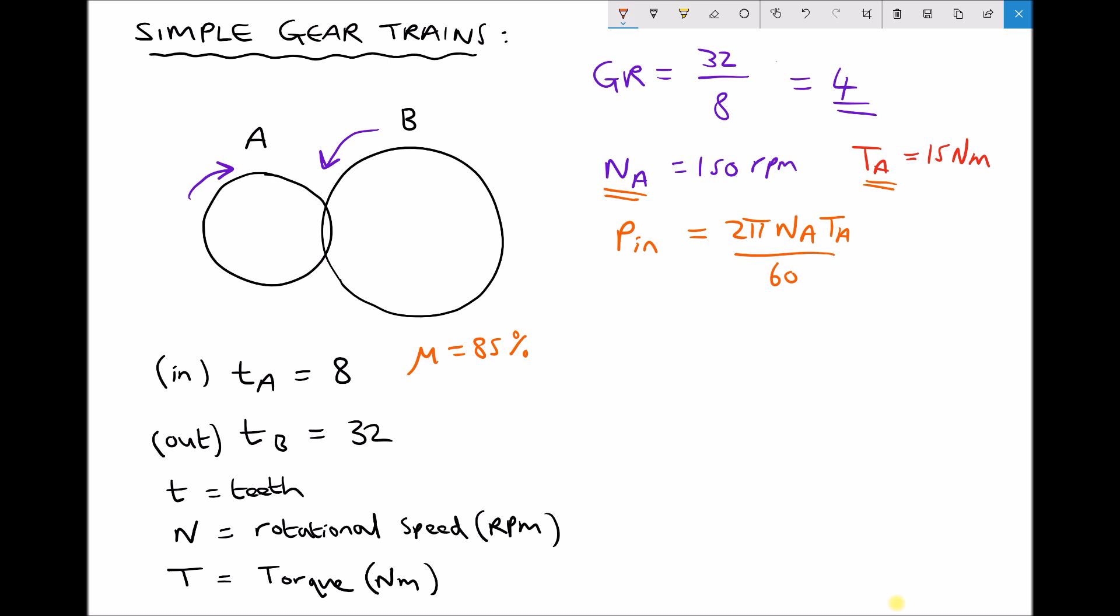And it's simply a case of plugging our numbers in there. So we have 2 times π times 150 times 15 over 60. Note that we use the rotational speed in RPM. So running that through the calculator gives us 235.6 watts.